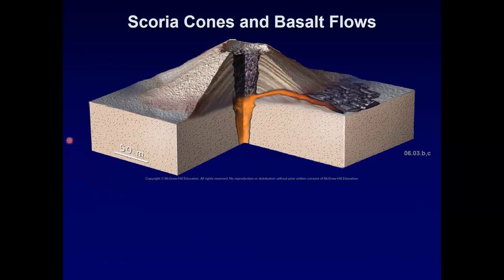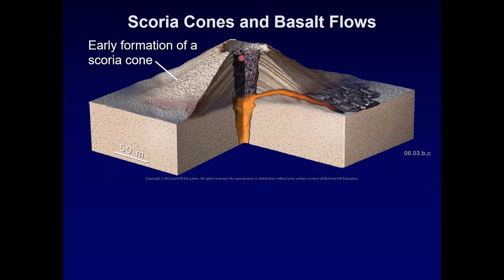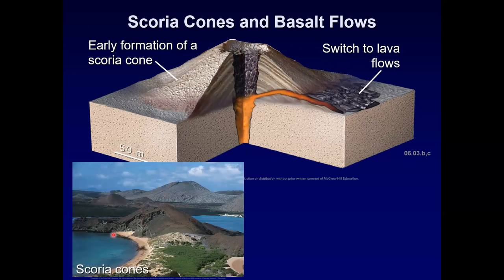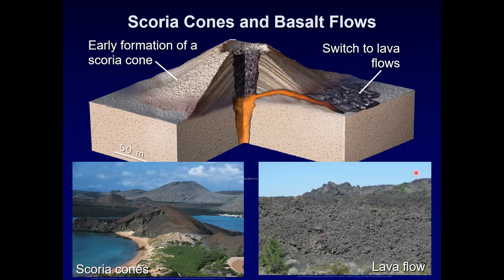Scoria cones and basalt flows: scoria cones form when basaltic magma contains dissolved gas. Magma that contains less gas will reach the surface — perhaps on the side — and erupt as a lava flow. Some material is ejected and gives you scoria itself. Here are some examples from the Galapagos Islands and a lava flow from the Newberry Volcano in Oregon.